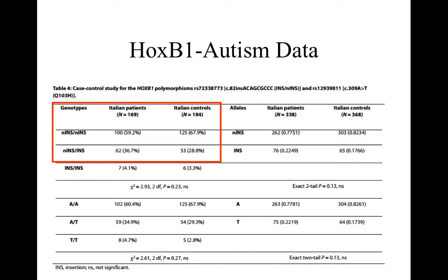One such mutation is called INS. It comes in two alleles: INS and NINS. The authors genotyped their two groups for this mutation. Let's focus on the data in the red square: the heterozygous NINS/INS and the homozygous NINS/NINS. We'll ignore the INS/INS group because they are so infrequent. The INS allele is considered to be the causal mutation. We will perform a chi-squared test to see if the heterozygotes are significantly associated with autism.